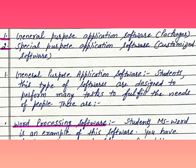Types of application softwares are: Number 1, general purpose application software packages. Number 2, special purpose application software. Number 3, customized software.